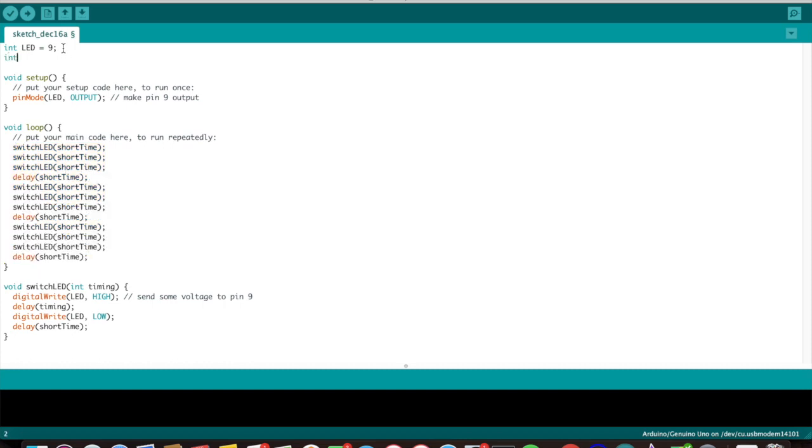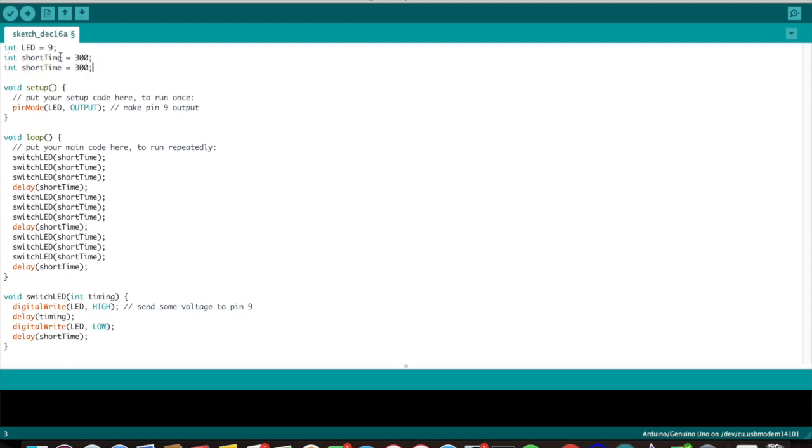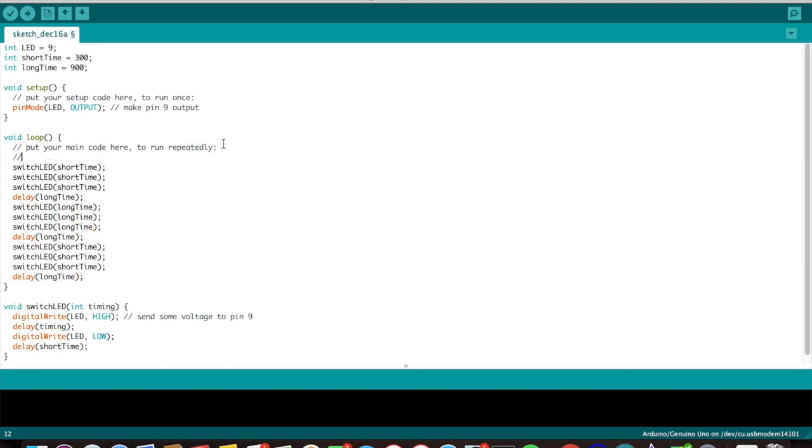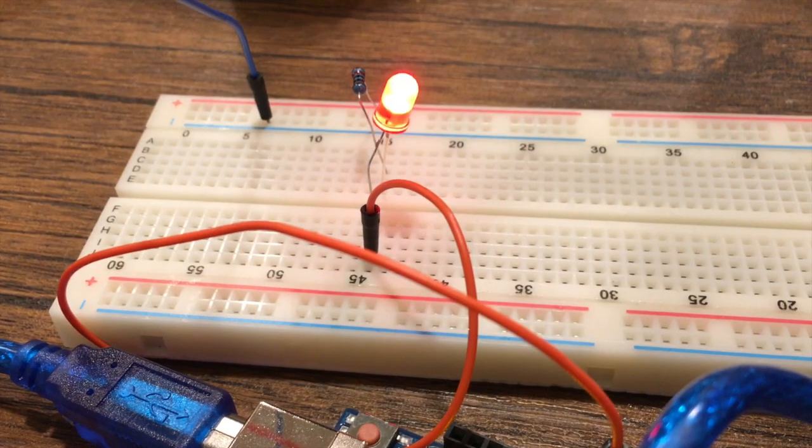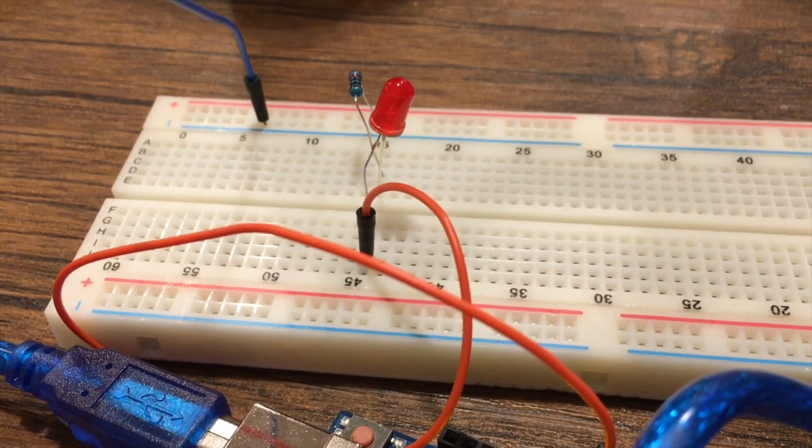Now instead of typing the short time and the long time over and over again, I'm gonna put those into variables at the top of my code also. Then now I can just copy and paste, and if I want to change the variable I can do that without having to go through every single part of the code and change all the numbers. So now let's see what that looks like. Wow, look at that!